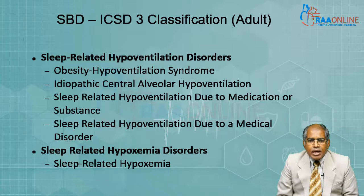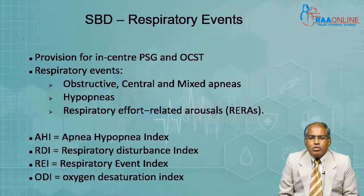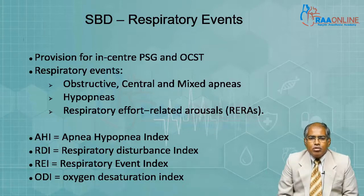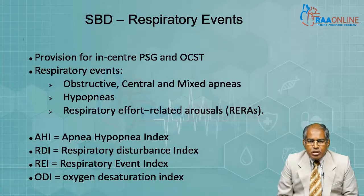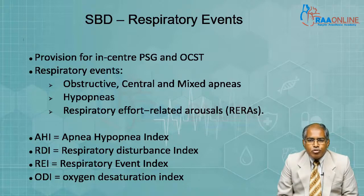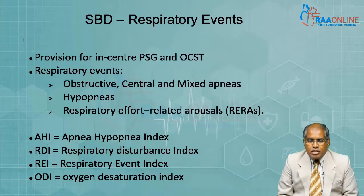Going through some of the nomenclature used in sleep breathing disorders: first, we perform a sleep study. You have two options — one is the in-center polysomnogram, where the patient goes to a sleep lab in the hospital for a full sleep study, called the type 1 sleep study. Then you have the out-of-center sleep study, abbreviated as OCST, which includes type 2, type 3, and type 4 sleep studies.